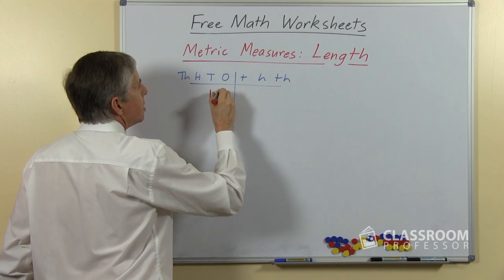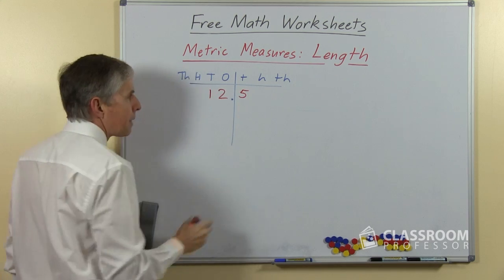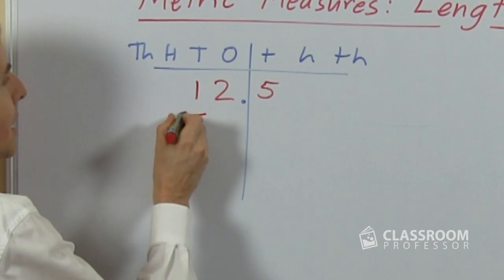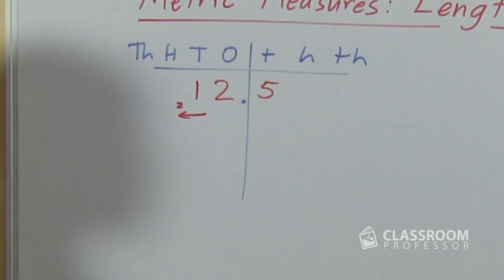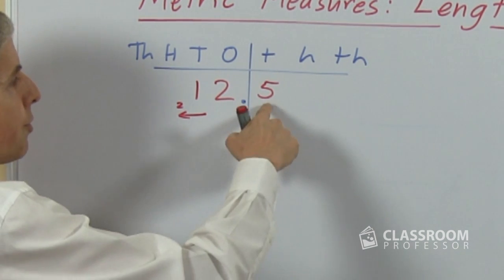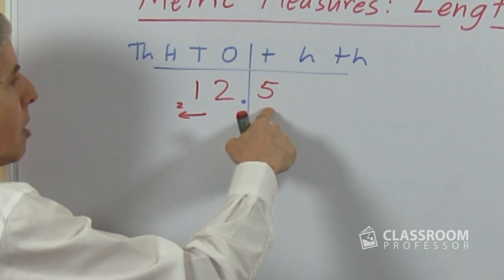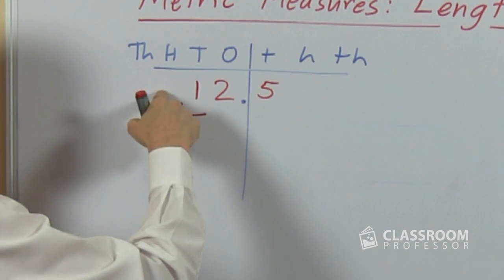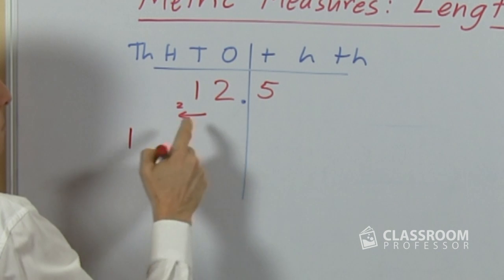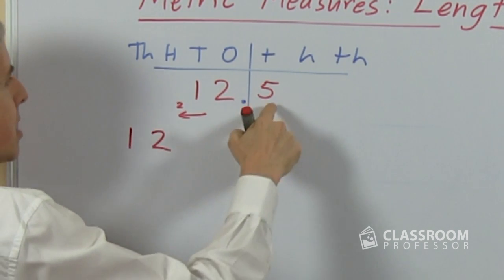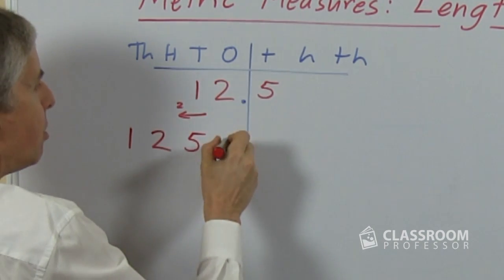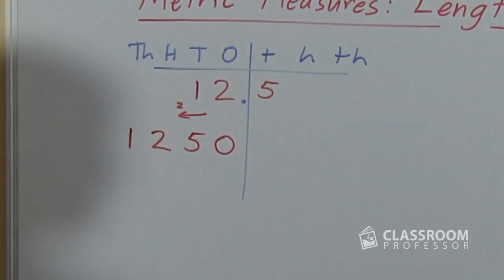Supposing we had the number 12.5 and we were multiplying that by 100, we would move everything this way, 2 places to multiply by 100. So if the 5 is in the tenths place, or rather we'll start with the 1, the 1's in the tens place. Where will it go to? 2 places will take it to the thousands place. The 2 will come to the hundreds place. The 5 will be in the tens place, and then we need a 0 to hold the ones place.